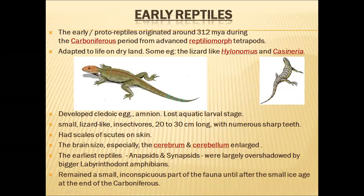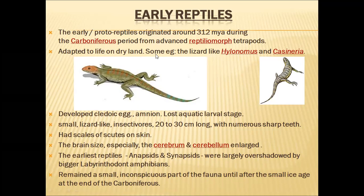Coming to early reptiles — they are also called protoreptiles. They originated around 312 million years ago during the Carboniferous period, having evolved from advanced reptiliomorph amphibians. These early reptiles adopted life on dry land or terrestrial habitats. Some examples of early reptiles include the lizard-like Hylonomus and Cassineria — these two are the primitive reptiles. Apart from these, many different types of reptiles also evolved later.